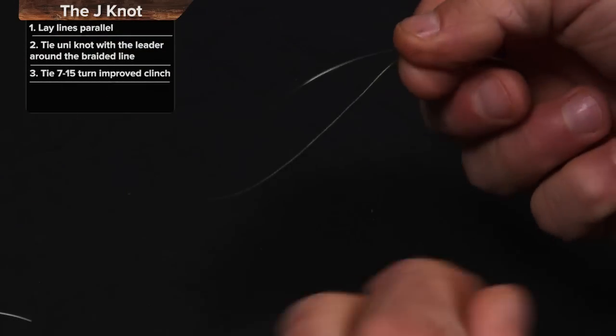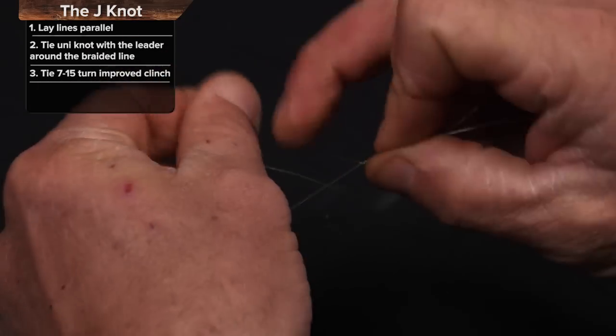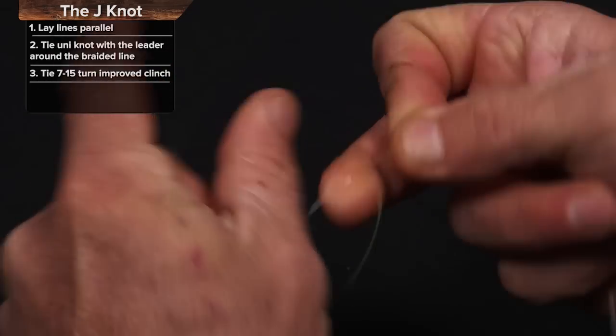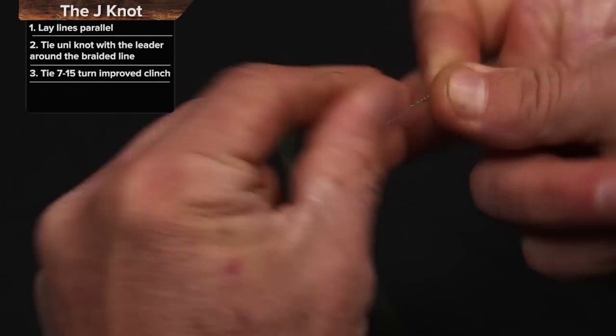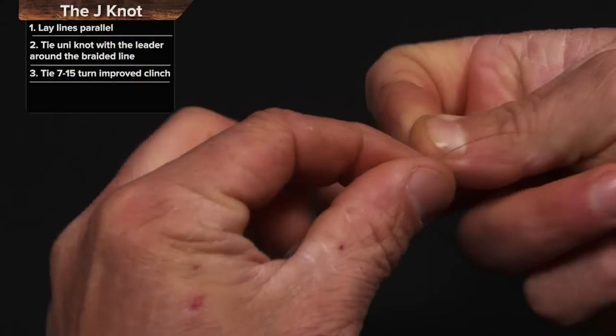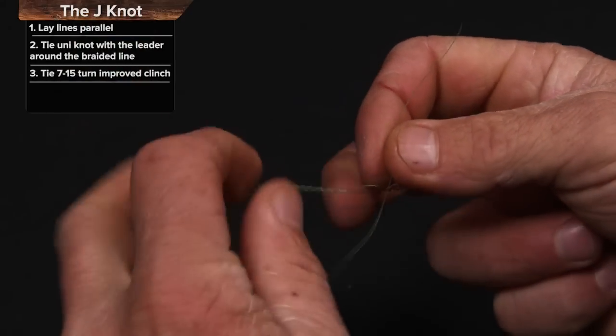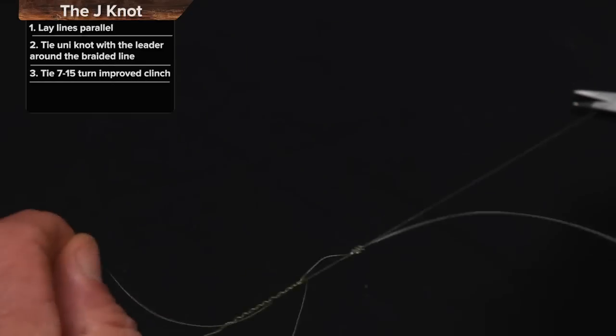I'm just going to take it and tie a clinch knot. It's a 12 turn clinch right there. Put it back through. Sometimes I'll improve it, sometimes I won't. Put it back through here to make it an improved clinch.